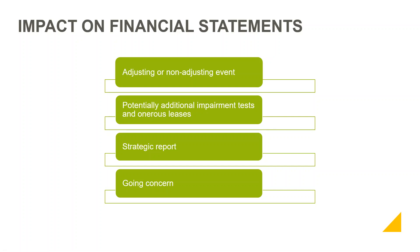If you have a March year-end, you may need to start thinking about whether coronavirus is impacting any of your impairment tests, or whether it could indicate you have any onerous leases. For example, with JCB, if they have a factory which they can't use because they're not getting products from China, there is a consideration of whether the lease of that factory could now be onerous. For March year-ends, there needs to be more consideration of whether coronavirus impacts any assets or liabilities on the balance sheet.